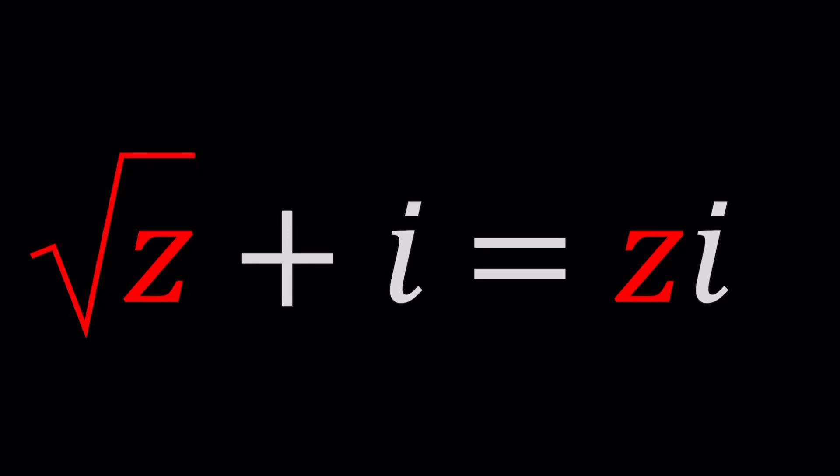Hello everyone. In this video, we're going to be solving a radical equation - how radical it can get. We have the square root of z plus i equals zi.